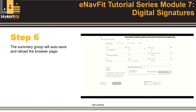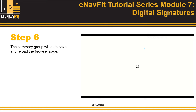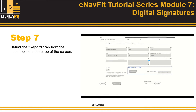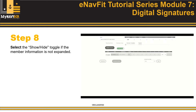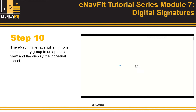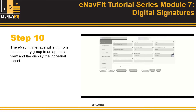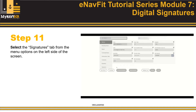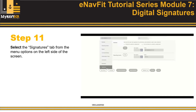Step 6: The summary group will auto-save and reload the page. Step 7: Select the Report tab from the menu options at the top of the screen. Step 8: Select the Show-Hide toggle if the member information is not expanded. Step 9: Select the Open button at the bottom of the Member tab. Step 10: eNAVFIT will shift from Summary Group to Appraisal view and display the individual report.